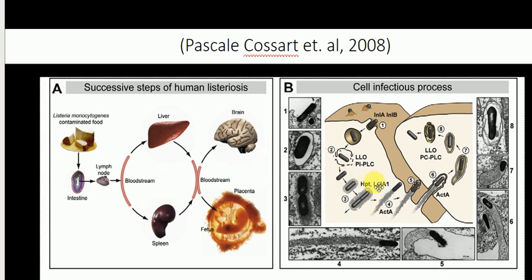The bacteria is now free inside the cell. The protein ActA is responsible for propelling the bacteria inside the cell through actin polymerization. This movement also helps the bacteria to invade another uninfected cell. Inside that uninfected cell, the double-membranous vacuole is lysed by the protein listeriolysin O.